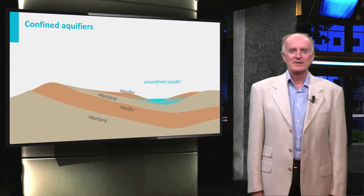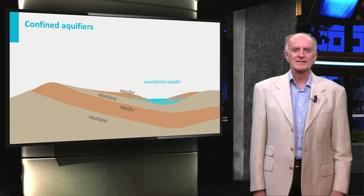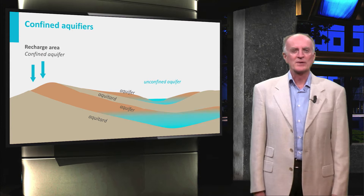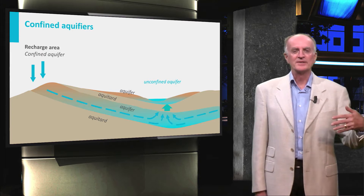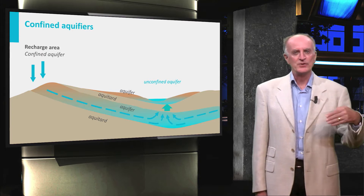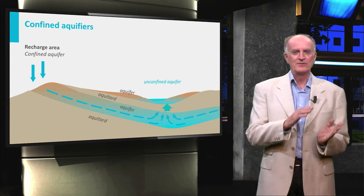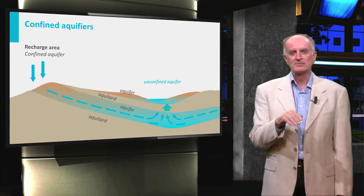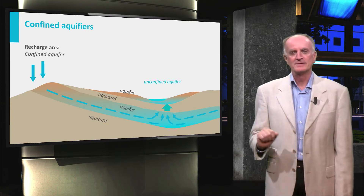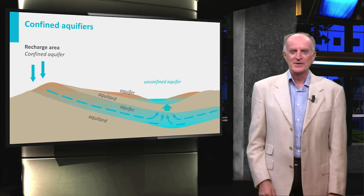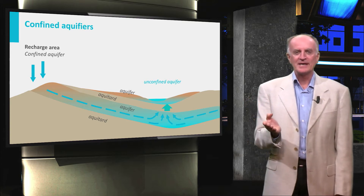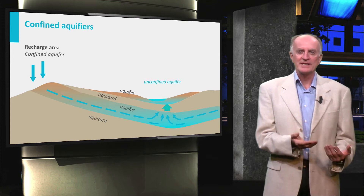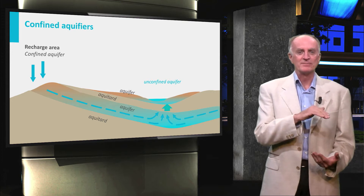Having looked at unconfined aquifers, we turn now our attention to confined aquifers. These form when waters infiltrate the ground in the recharge zone, enter a non-horizontal permeable layer, which is bounded by impermeable lithologies and which plunges into the ground steeper than the topography. As a consequence, water will flow along the dipping layer and eventually form an aquifer which, beside the recharge area, is fully disconnected from the surface.